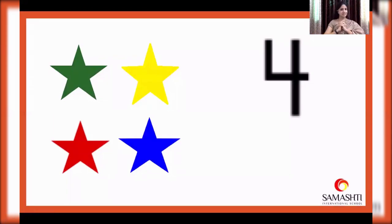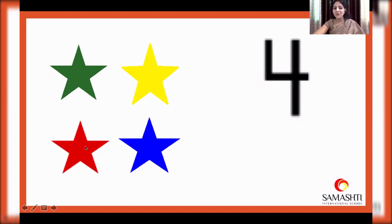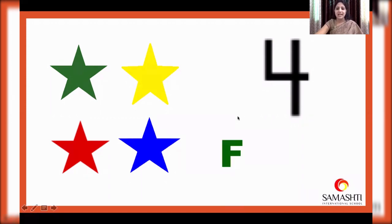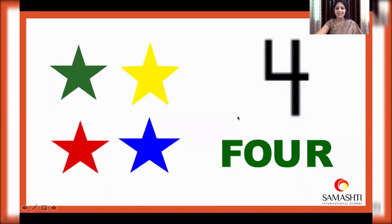Let's together count the stars. One, two, three, four. Four stars. And can you help me name the colors of these stars? Yellow, green, blue, red. So four stars. Four. F-O-U-R. Four.